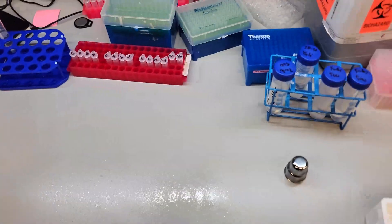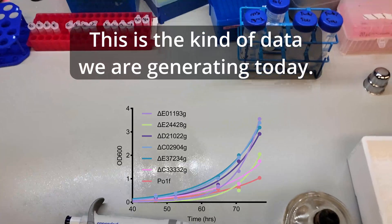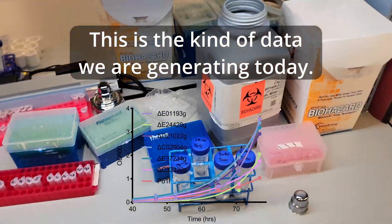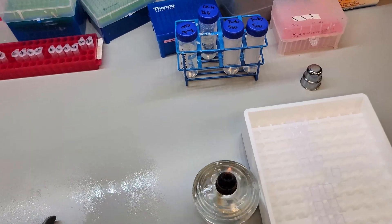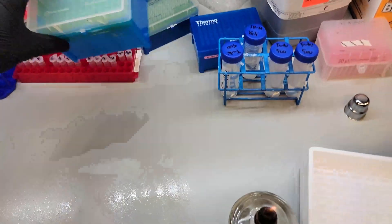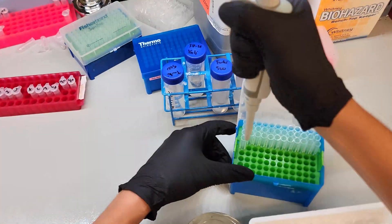Basically I have some shake flasks that have been growing for a few days and I've been measuring their optical density about every six hours. Growth curves are something that is very easy to do, but incredibly difficult to do well, right?